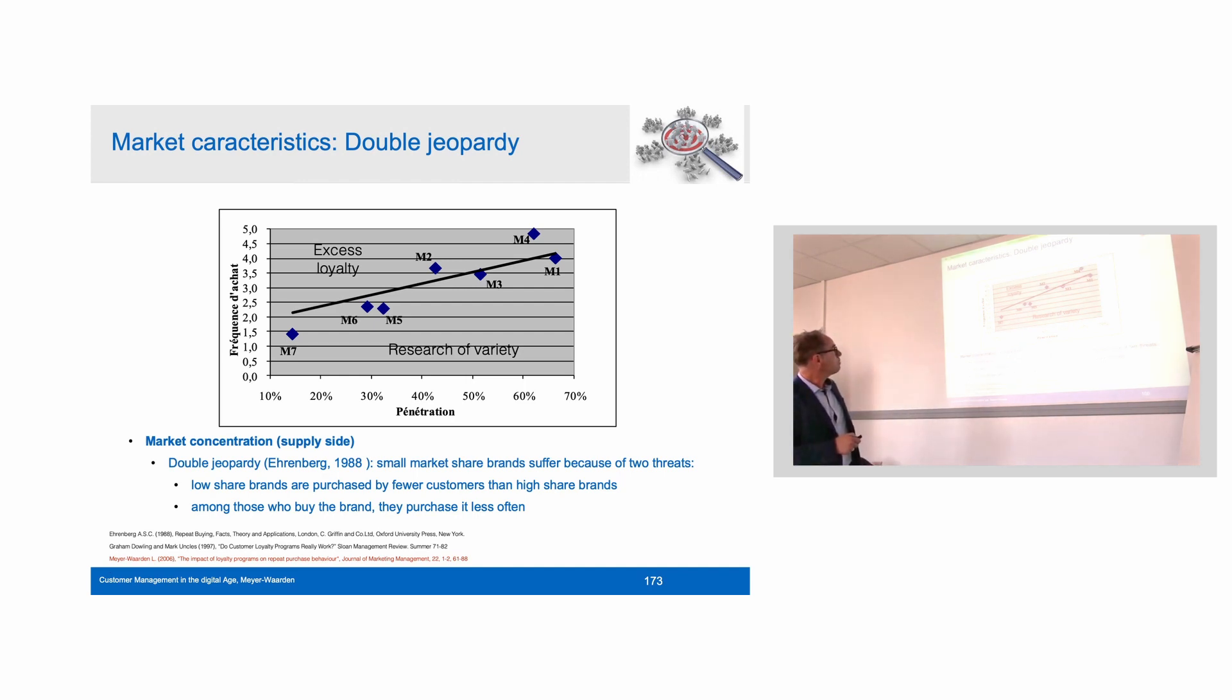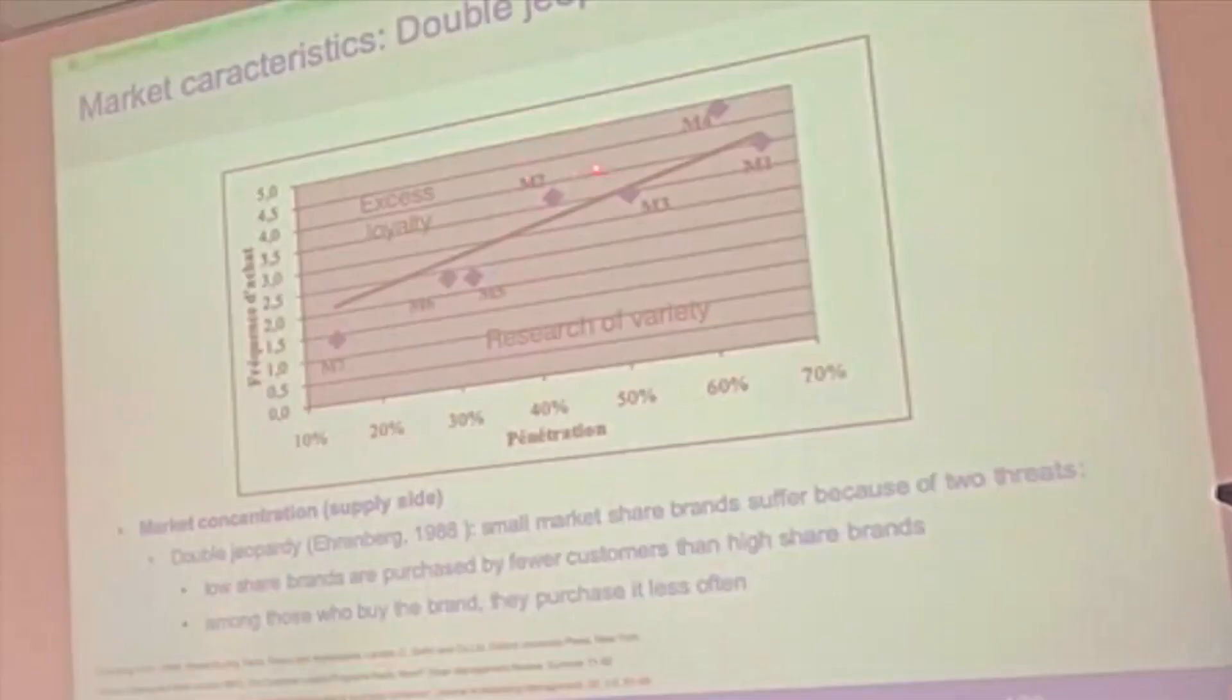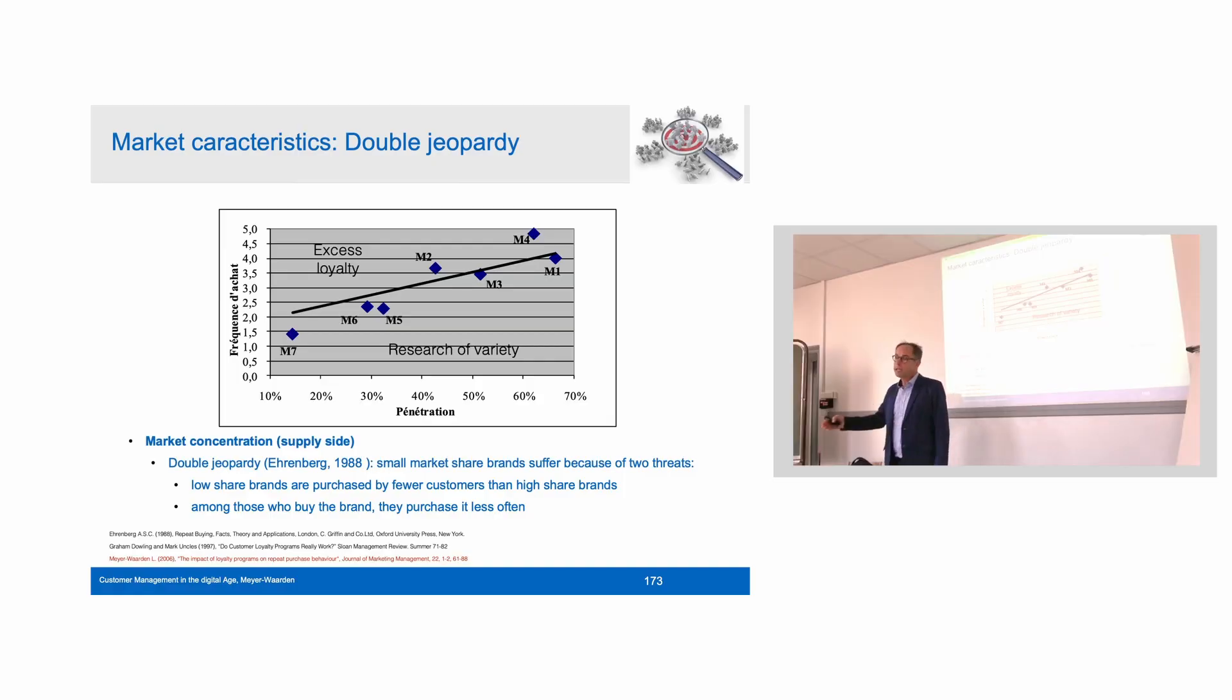This is a benchmark norm calculated by a geometrical model. All what is beyond, above the line, is called excess loyalty. This is brought by a marketing tool. And all what is on the line is normal, so there's actually no impact of the loyalty program. For example, stores 1 and 3, but you can find actually stores 2 and 4 have excess loyalty, which is brought by the loyalty program. So leading brands have more efficient marketing actions, including loyalty programs.